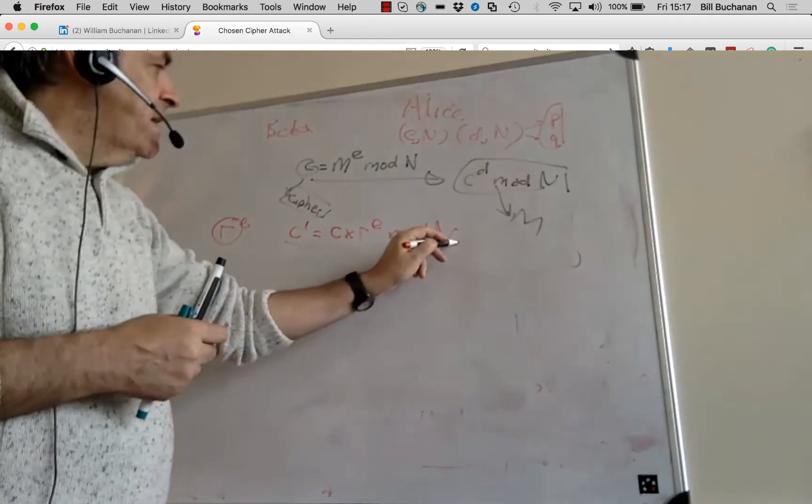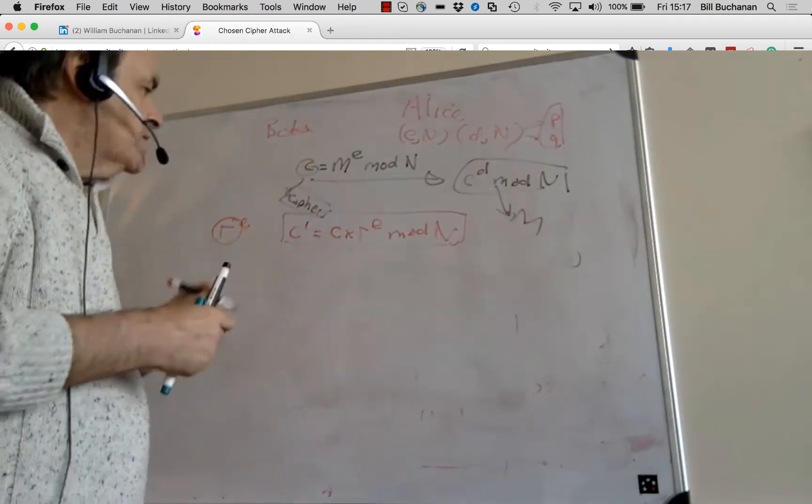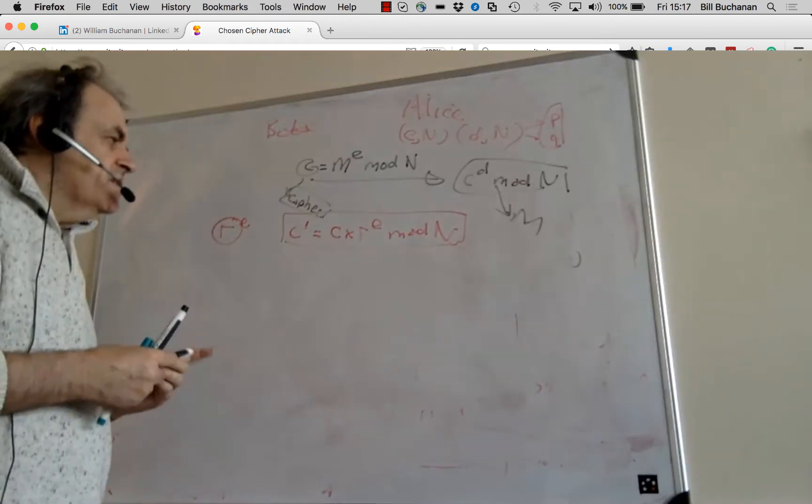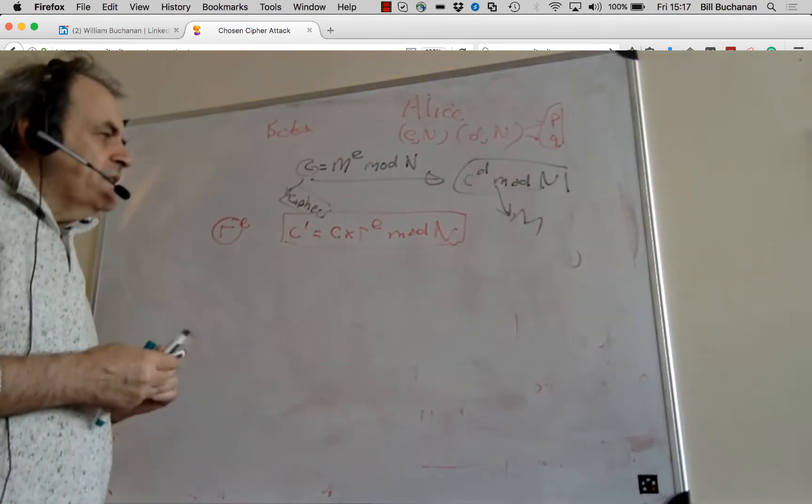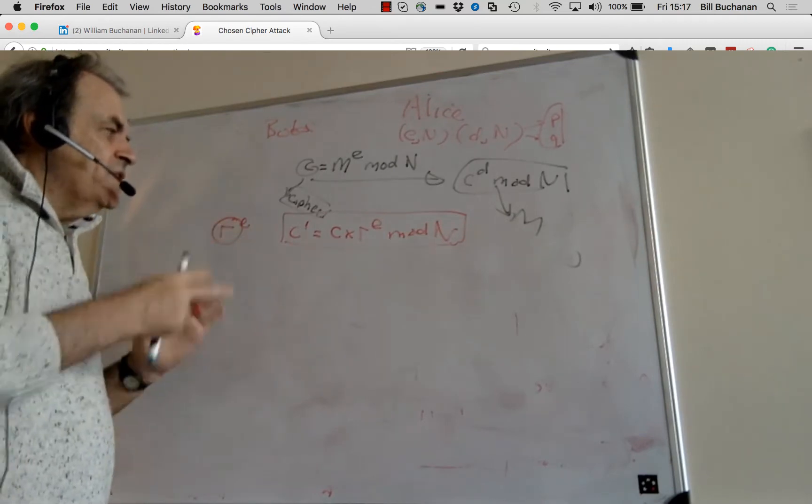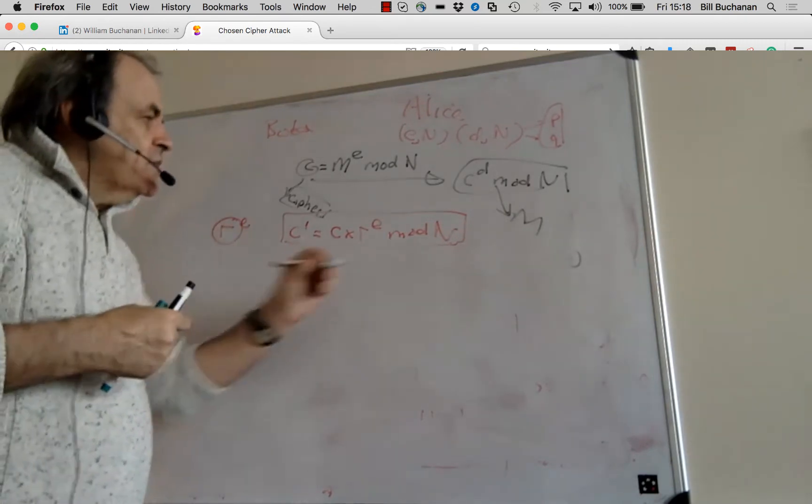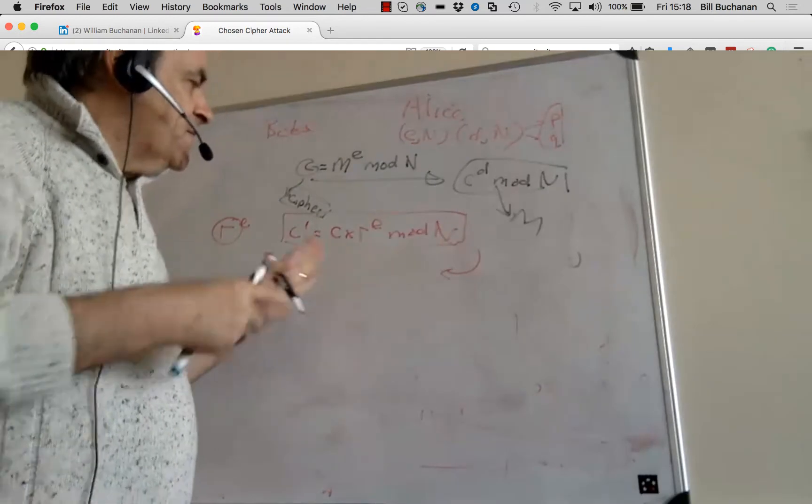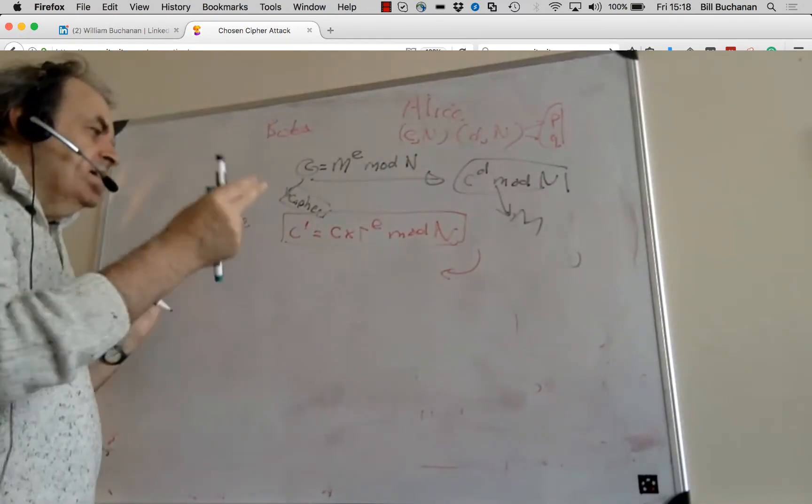So then Alice reads this and doesn't understand what the message actually is. So she sends back a message saying, Bob, I can't understand the message that you sent.